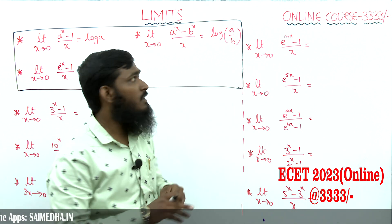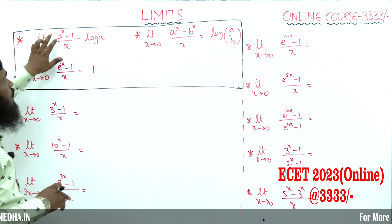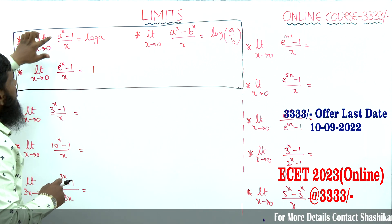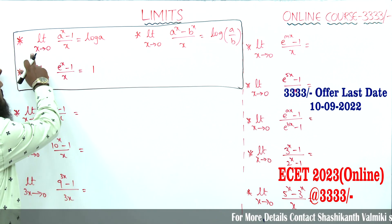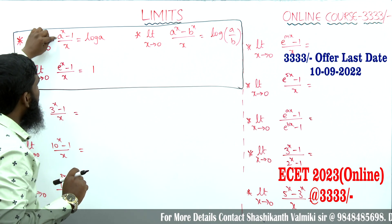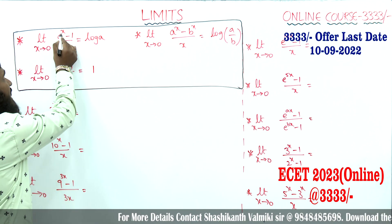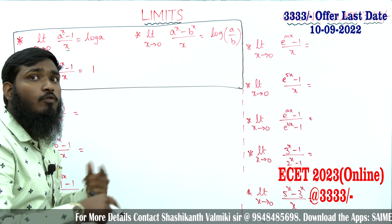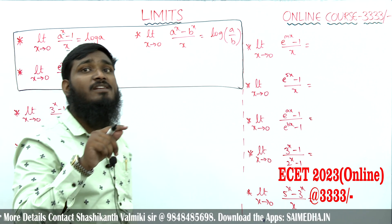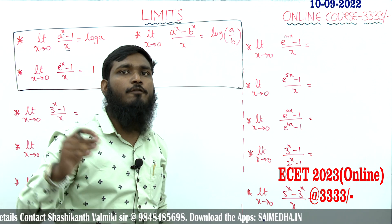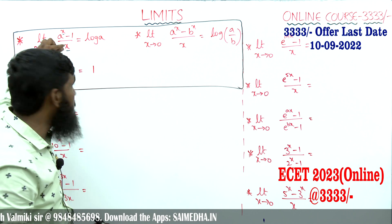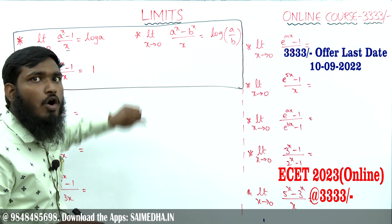Now let us start this shortcut. The result is: limit x tends to 0, a^x minus 1 divided by x equals log a. Here x must be tending to 0, and the x in the power and the x in the denominator must be the same. For example, if a equals 4, the answer is log 4; if a equals 5, the answer is log 5.